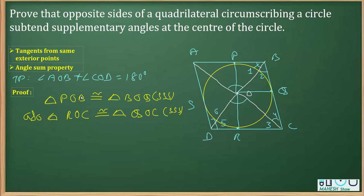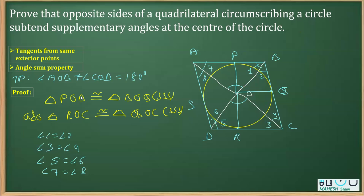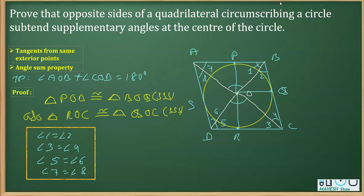Similarly, angle 5 equals angle 6, and angle 7 equals angle 8. Now, in the next part we are going to use the angle sum property of a quadrilateral to prove the remaining part.